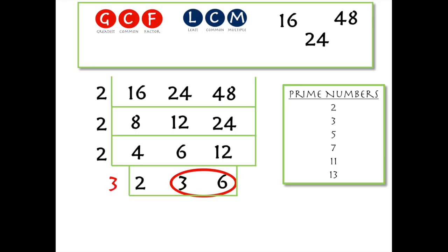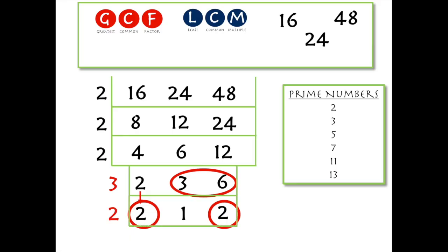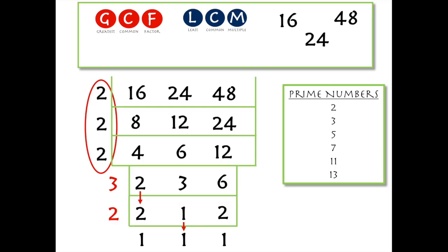I'll write down three in a different color as a reminder. Since three can't go into two, I'll just bring that two down. Three goes into three once and into six two times. Now I have all prime numbers on the bottom, but two of them are the same, so I can keep going — two goes into both twos. Two goes into two once, I'll bring down the other, and two goes into two once. I stop here because there's not much we can do with three ones.